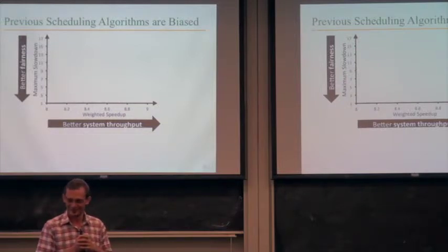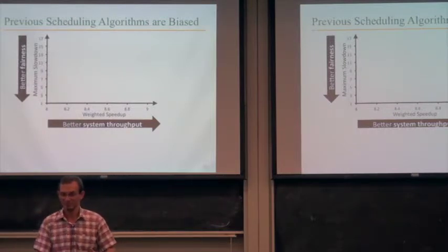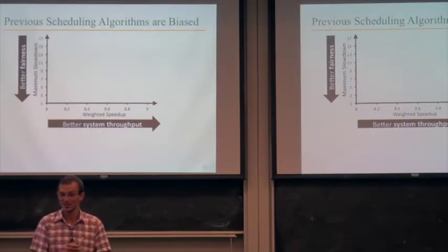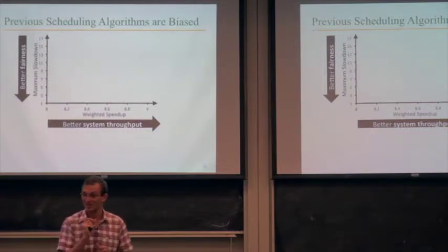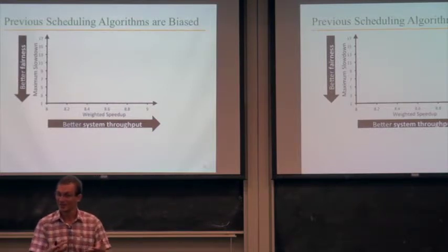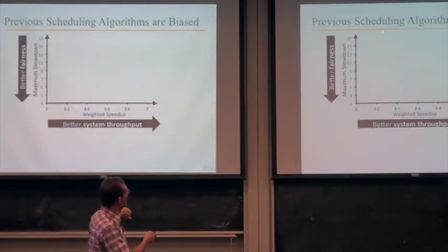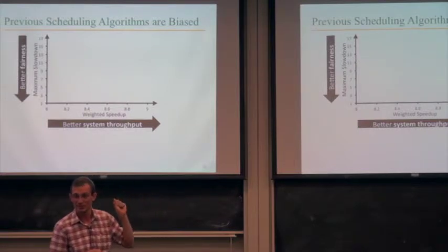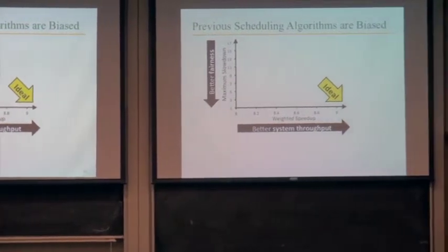Interestingly, slowdown can be less than one in multi-threaded applications — if one process fetches data that another thread also needs, the second thread may actually speed up relative to running alone. But for these workloads, that doesn't happen. This data is averaged over hundreds of applications on a 24-core system with four memory controllers. Ideally you'd like high system throughput and low maximum slowdown — high fairness.